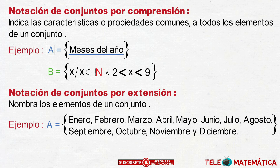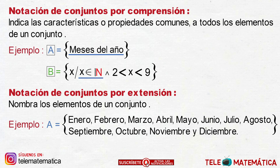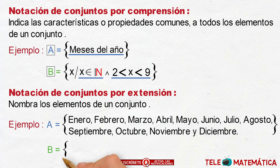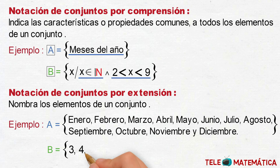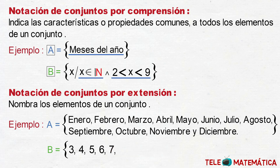Y el segundo conjunto, que es el conjunto B, donde las características o propiedades: en primer lugar, X pertenece al conjunto de los números naturales, y la segunda característica es que X se encuentra entre 2 y 9 sin incluir los extremos. Luego, este conjunto definido por extensión sería igual al número 3, el número 4, el número 5, el número 6, el número 7 y el número 8.